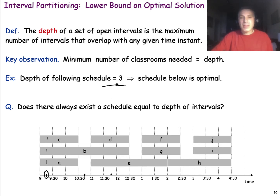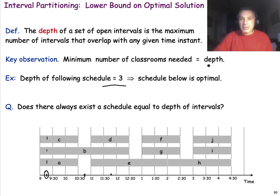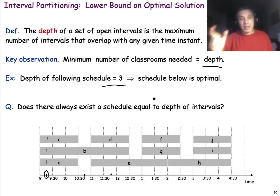It is easy to see that the optimal solution to this scheduling problem is equal to the depth. You cannot have fewer classrooms than the depth and still schedule all the lectures. Now that we've established the optimal solution equals the depth, the question is whether we can find an algorithm that produces a number of classrooms equal to the depth — if so, that algorithm is clearly optimal.